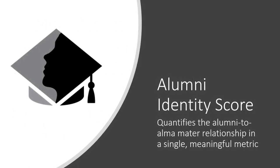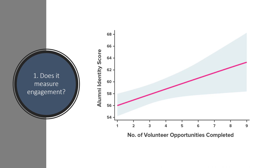We ask people to agree or disagree with these 15 statements in this quick three to four minute questionnaire. We get the alumni identity score, which quantifies the alumni-to-alma mater relationship in a single meaningful metric. So let's take this alumni identity score through the alumni metric test. Number one, does it measure engagement? Here's a chart from one of my past clients looking at the number of volunteer opportunities completed and alumni identity score. We can see there's a really strong correlation — the more opportunities an alumnus has completed, the higher their alumni identity score. So yes, it does measure engagement.